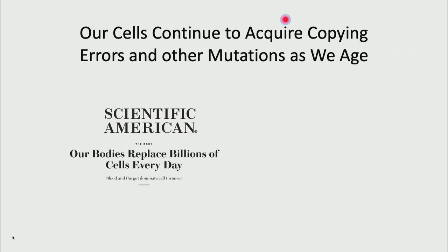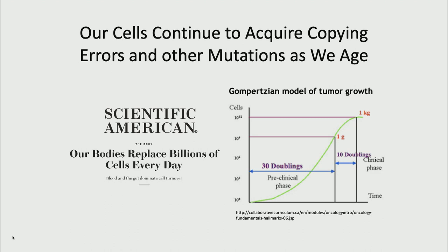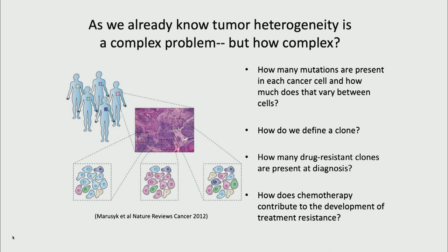Switching to cancer: we continue acquiring copying errors beyond development, and as an oncologist, we see this all the time. Going from one cell to hundreds of billions, you can imagine all the copying errors occurring. We want to ask fundamental questions: How many mutations are there in each cell? How much does it vary between cells? What is a clone — is it just having different mutations, or is it functional? How many drug-resistant clones exist when we start, and can we identify those? How is chemotherapy contributing to the problem — since it's mutagenic, is it in some cases driving evolution even while killing some cells?